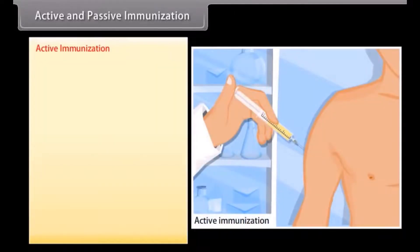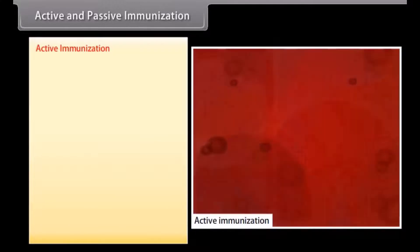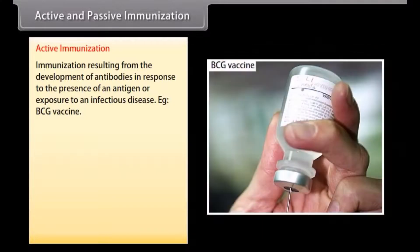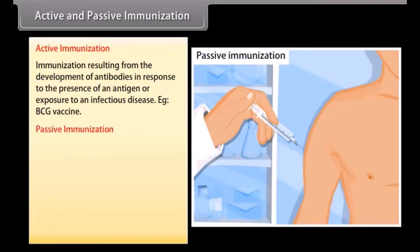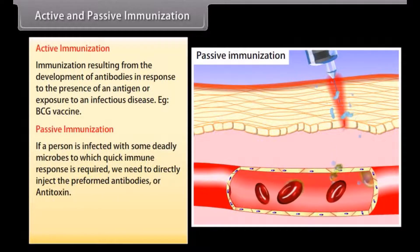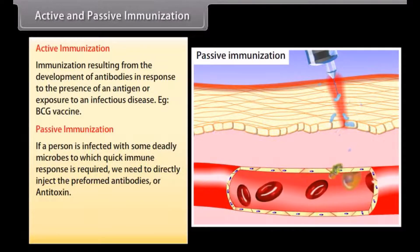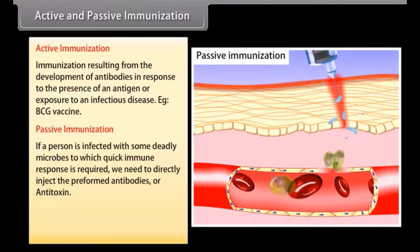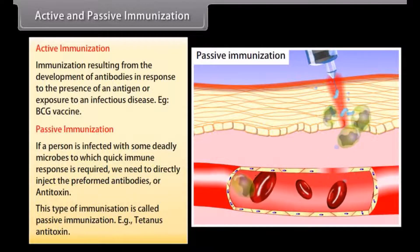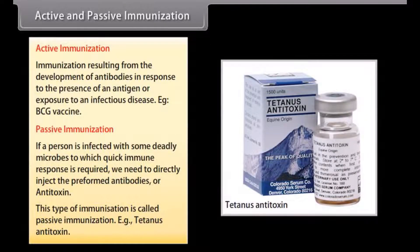Active immunization is the immunization resulting from the development of antibodies in response to the presence of an antigen or exposure to an infectious disease. Example: BCG vaccine. Passive immunization: if a person is infected with some deadly microbes to which a quick immune response is required, we need to directly inject preformed antibodies or antitoxin. This type of immunization is called passive immunization. Example: tetanus antitoxin.